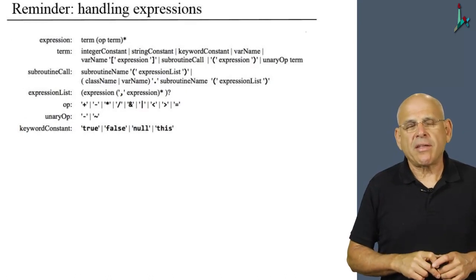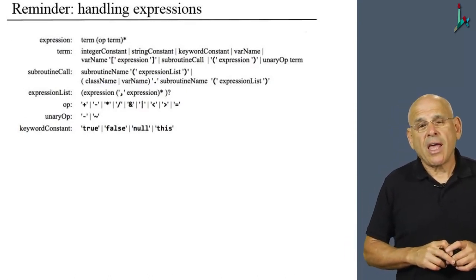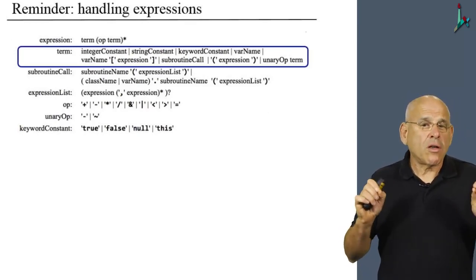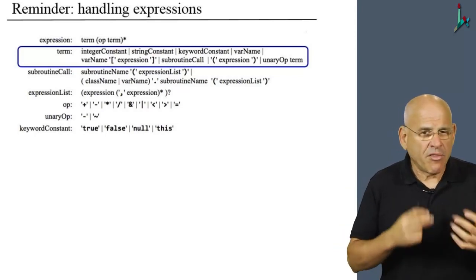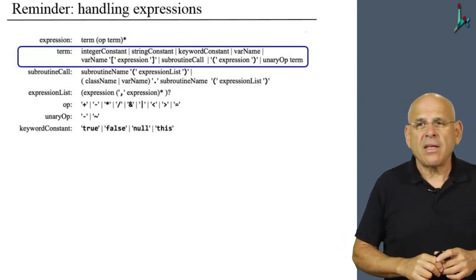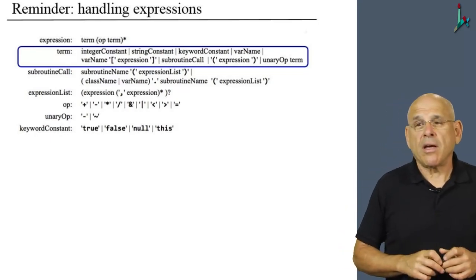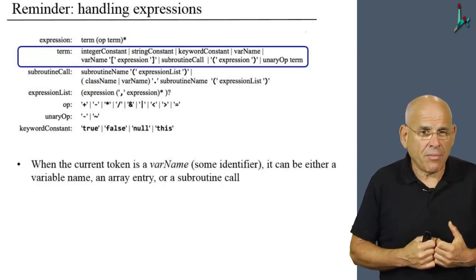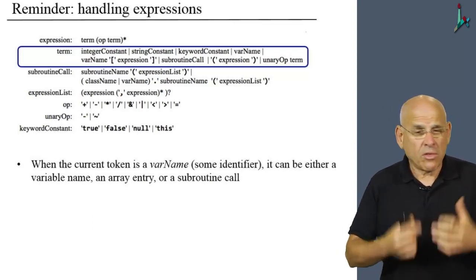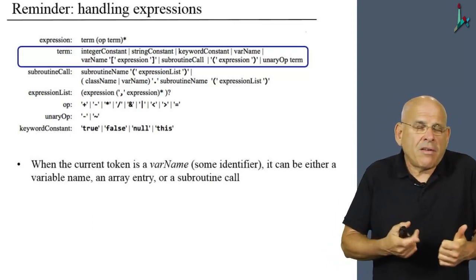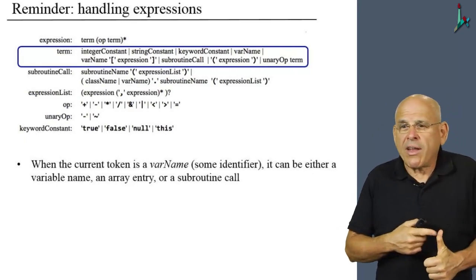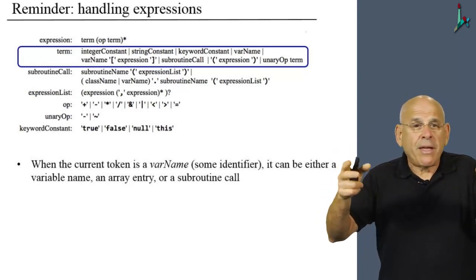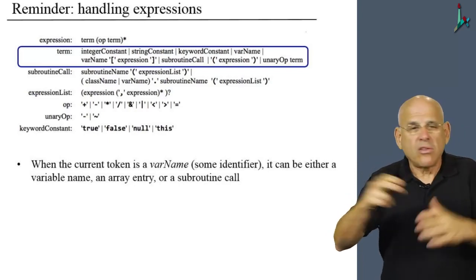Now I'd like to end this unit with a few words about handling expressions. Going back to the Jack grammar, the problematic clause of the grammar in terms of parsing is what is highlighted here. It's the handling of the term rule. The problem is that when the current token is a variable name, as I explained in one of the previous units, or some identifier, it can be either a variable name like x, or it can be an array entry like x[18], for example, or it can be a subroutine call, x.do something, right?